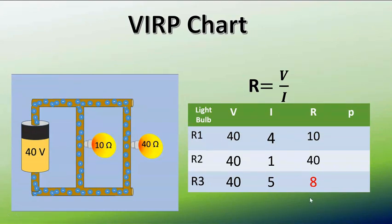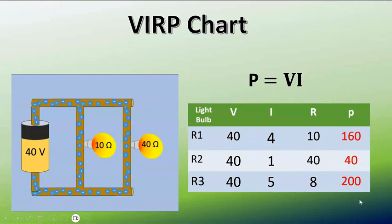So we avoided using the formula for total resistance, although we won't always be able to do that. Sometimes we'll have to use it. Now power is just V times I, so 40 times 4, 40 times 1, 40 times 5 gives you all these values for the power. To make sure you did it right, you can add together the powers of the two resistors. 160 plus 40 equals 200, so we got that right.